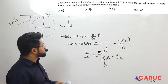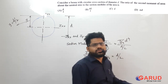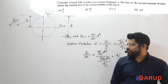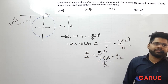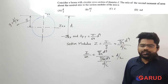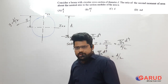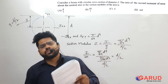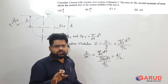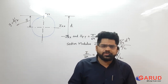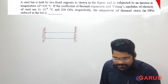This is a very simple numerical — you should take only 2 to 3 seconds to identify and solve it. When you see the ratio I/Z, you immediately know Z = I/y, so the ratio I/Z equals y, which is D/2. This question was asked in the year 2017, Set 2.